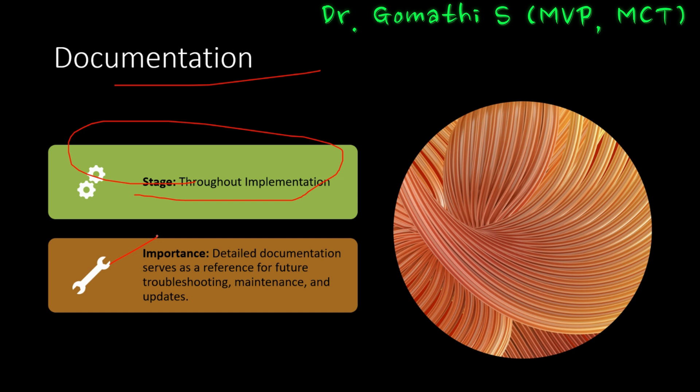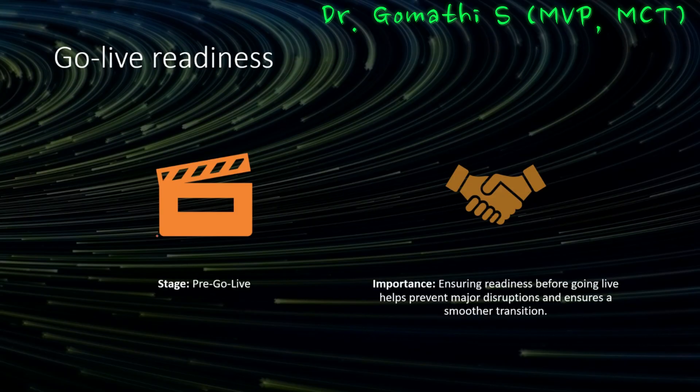Documentation runs throughout the entire implementation. Comprehensive documentation acts as a guidebook for future troubleshooting, maintenance, and updates. Throughout the implementation process, we diligently maintain detailed records of system configuration, customizations, and any unique settings. This documentation becomes a valuable resource for future reference, allowing for efficient troubleshooting, smooth system updates, and informed decision making. By meticulously documenting every step, we ensure that the system's evolution remains well-documented and transparent.